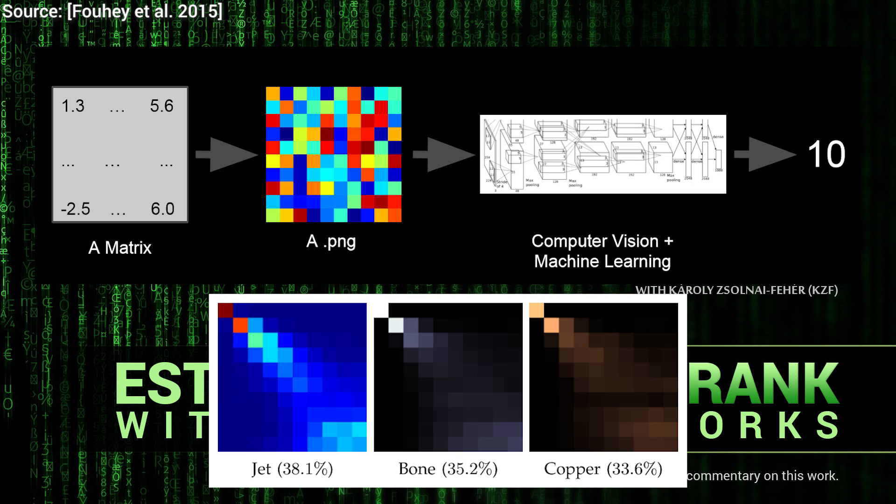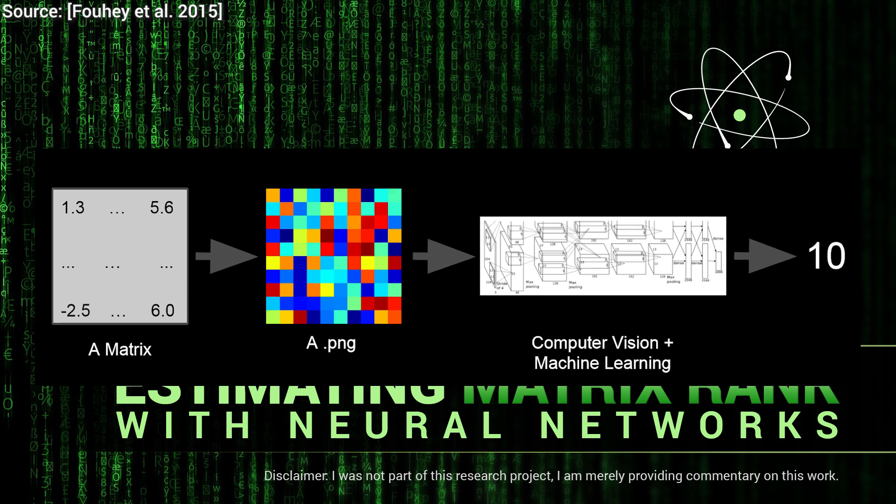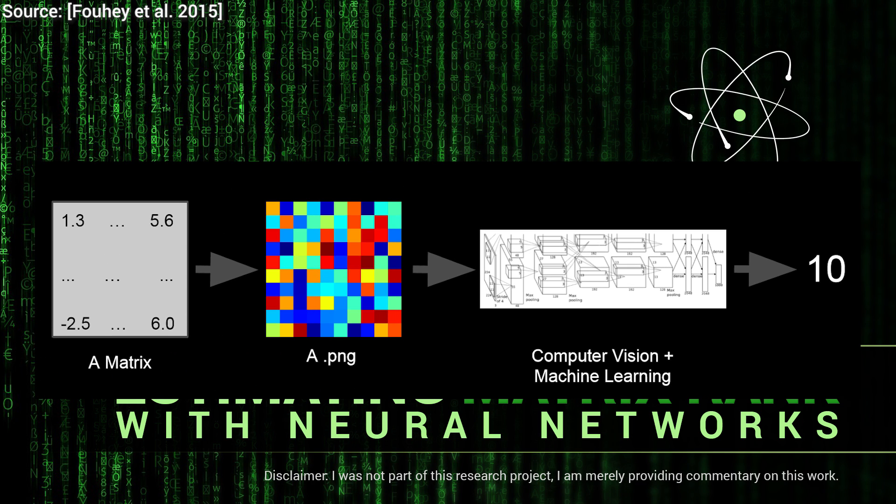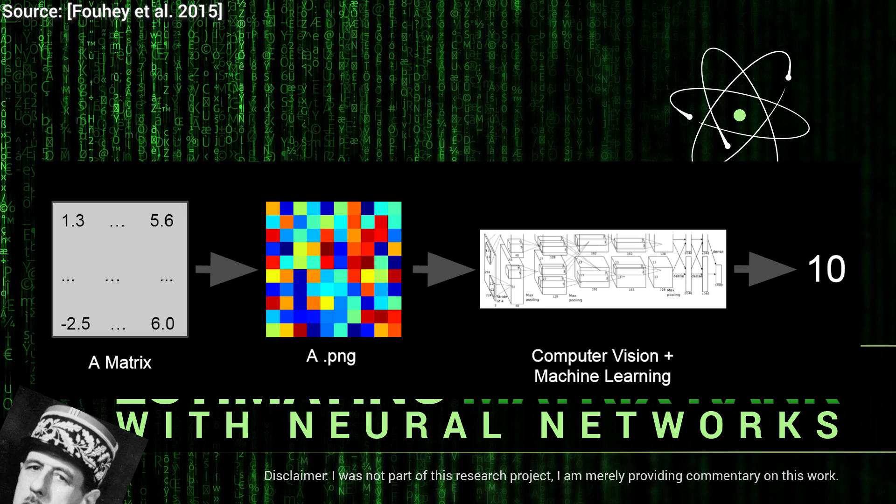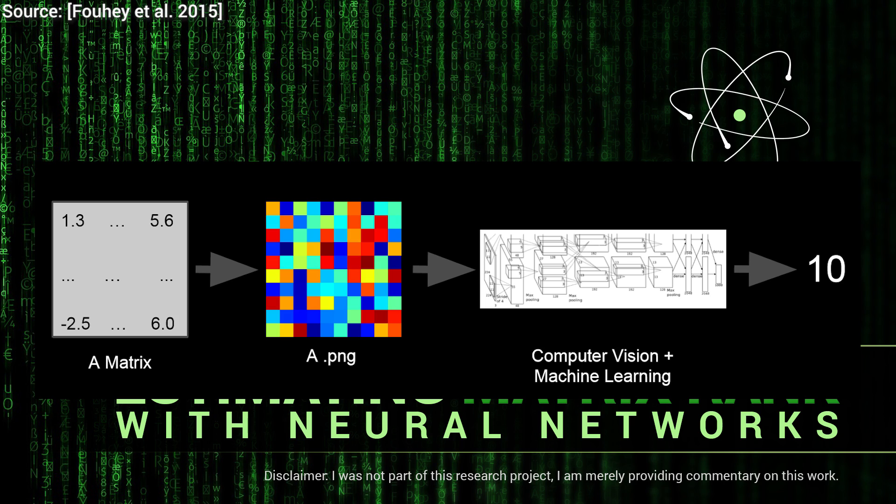This way, after computing the ranks of many matrices, we can create a lot of input images and output ranks for the neural network to learn on. After that, the goal is that we feed in an unknown matrix in the form of an image, and the network would have to guess what the rank is. It is almost like having an expert scientist unleash his intuition on such a matrix, much like a fun guessing game for intoxicated mathematicians.